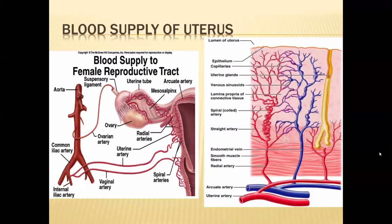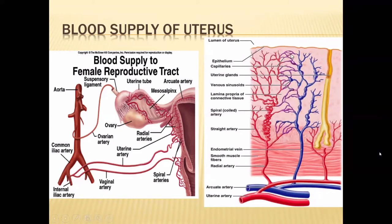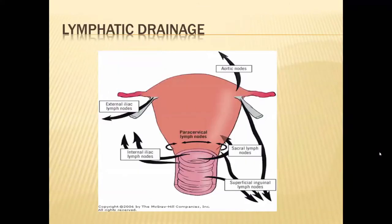Inside the uterus, the uterine artery divides into arcuate arteries, which give branches as radial arteries, which in turn give spiral or coiled arteries, then capillaries. During the menstrual cycle, as the endometrium thickens, the spiral arteries cannot elongate proportionally, leading to decreased blood supply. The endometrial portions deprived of vascularity shed, causing menstruation.